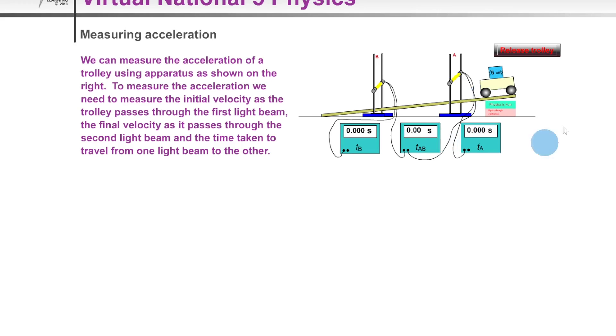So here we have the alternative setup where we've got two light gates and a single mask on the card. And you'll notice there are three timers here to measure three separate times. So if we look at timer A-B first of all, that's going to measure the time taken for the cards to go from A to B by cutting through the light gates at each one.